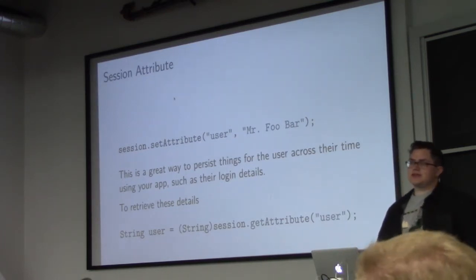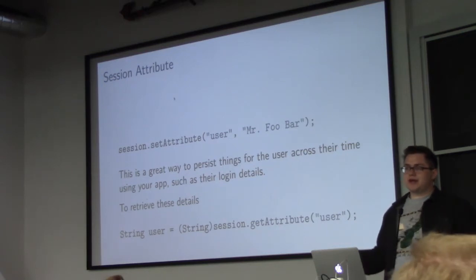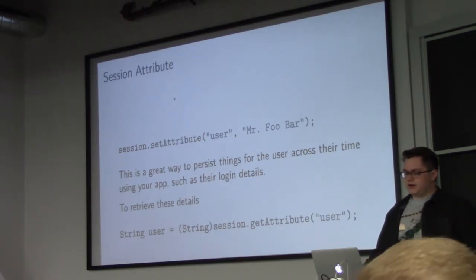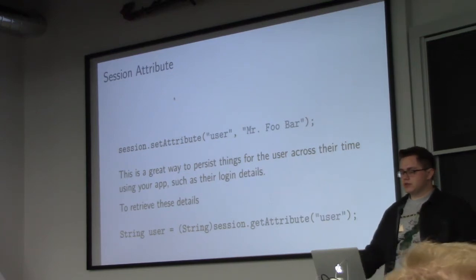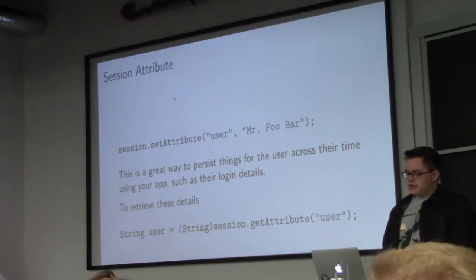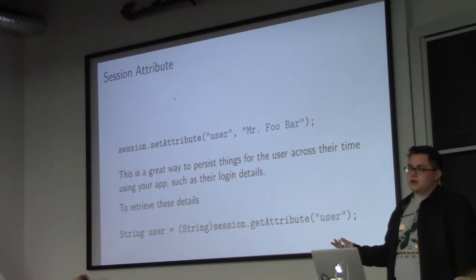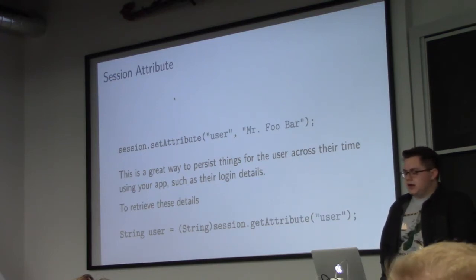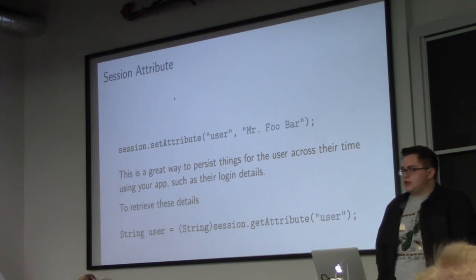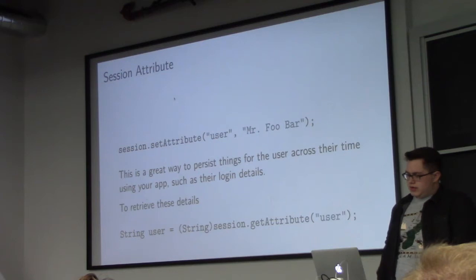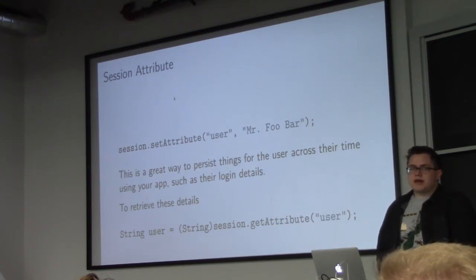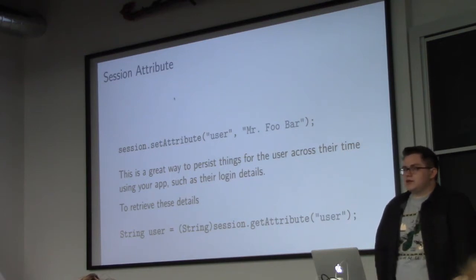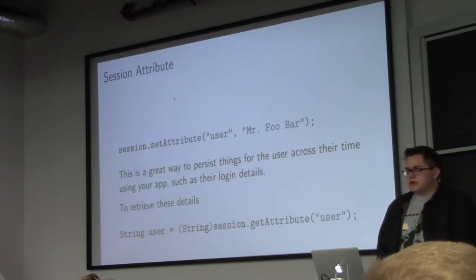One other important thing is a session attribute. This allows you to persist certain variables across many pages for a user. In your Java code, you can say session.setAttribute() with a key and a value. That way, if the user is logged in, you can store their login name or whether they're an admin. On each page, you can then say session.getAttribute('user') to retrieve it. You can actually store objects in there — when I did the project, I stored a login object — but you can also just store strings.